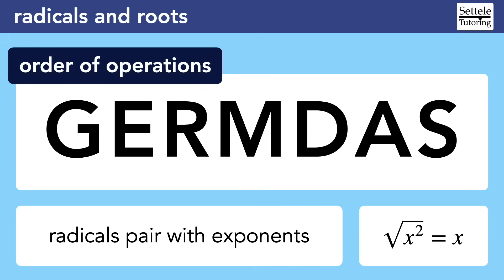Before we get into the important rules for radicals and roots on the SAT, let's remember how radicals fit into the big picture for arithmetic and algebra. I use GERMDUST to represent the order of operations because it includes the R, which stands for roots and radicals, and it pairs the R with the E for exponents, reminding us that these operations work together very well. In a way, they're actually the same thing.